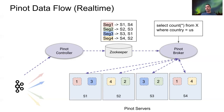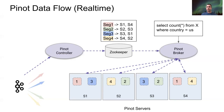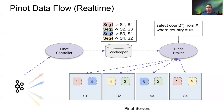The broker will do a final aggregation and then return the response back to the user. This system has a good scale-out design. If you're ever running out of capacity or want more throughput, all you need to do is add more machines. The controller will allocate new segments onto the new machines and the broker will automatically discover these new segments.